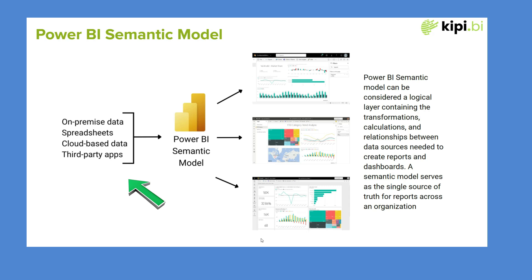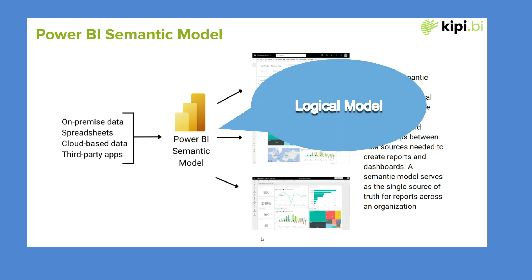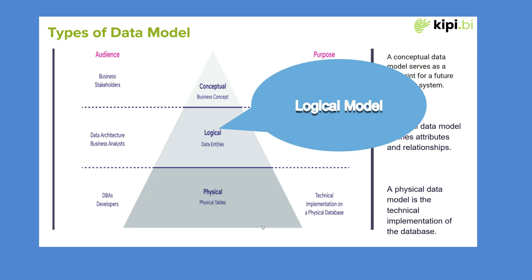Whether it is Tableau, Power BI, Sigma, and so forth, there is an extra layer between the data and the visualization, and that layer is called the semantic model. As we discussed in the first part of this series, a data warehouse goes through three different stages: first is the conceptual model, second is the logical model, and third is the physical model. The semantic model is pretty much like the logical model — in a way, you are coming back to the logical model now.